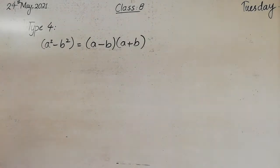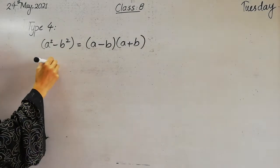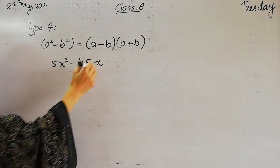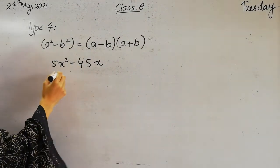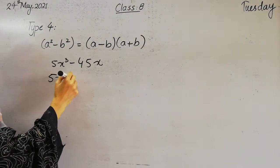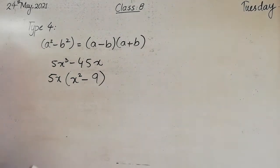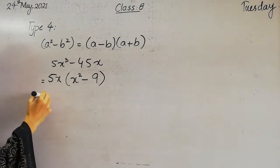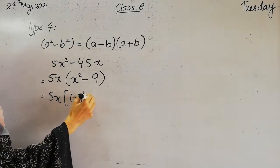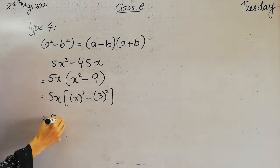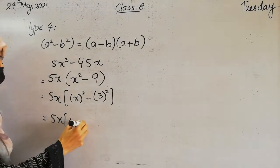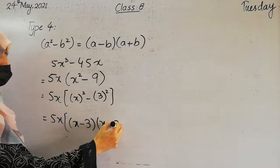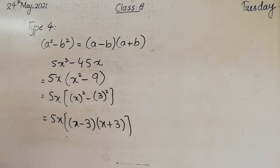For example, if we have 5x cube minus 45x. So what was our first step? In the first step, we had a formula. 5 and x are common in both terms. Here what remains is x square minus 9. Now we need to write this in the form of squares: 5x, x square minus 9 becomes x square minus 3 square. So 5x, this is a square minus b square, and is equal to a minus b into a plus b. This is the factorization of type 4.